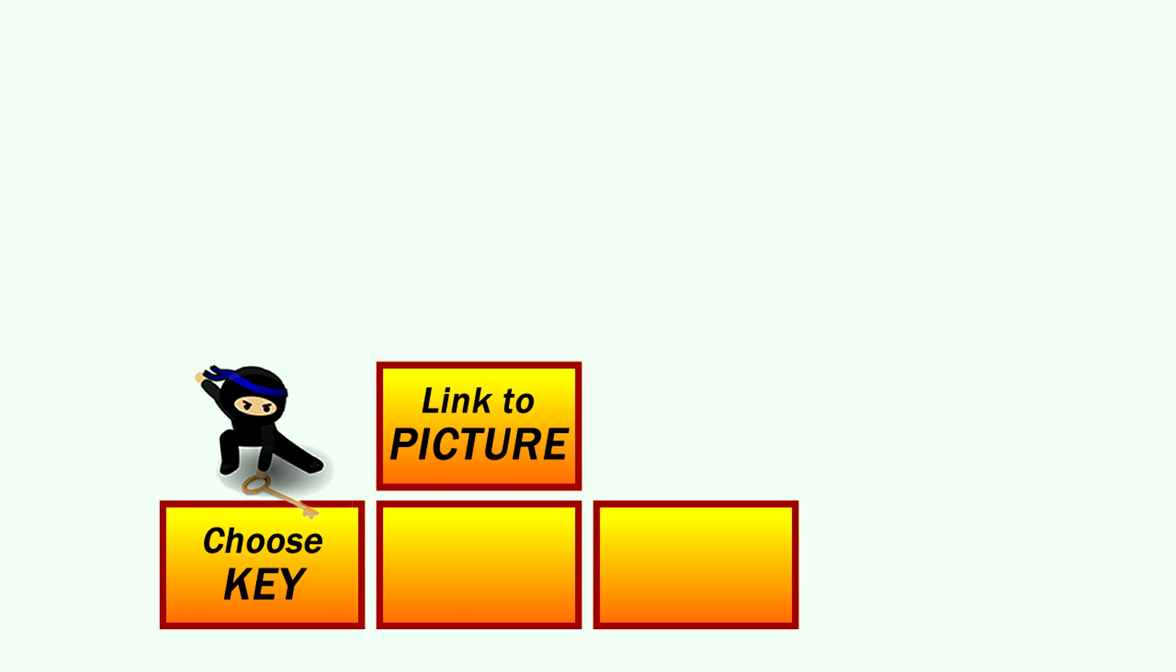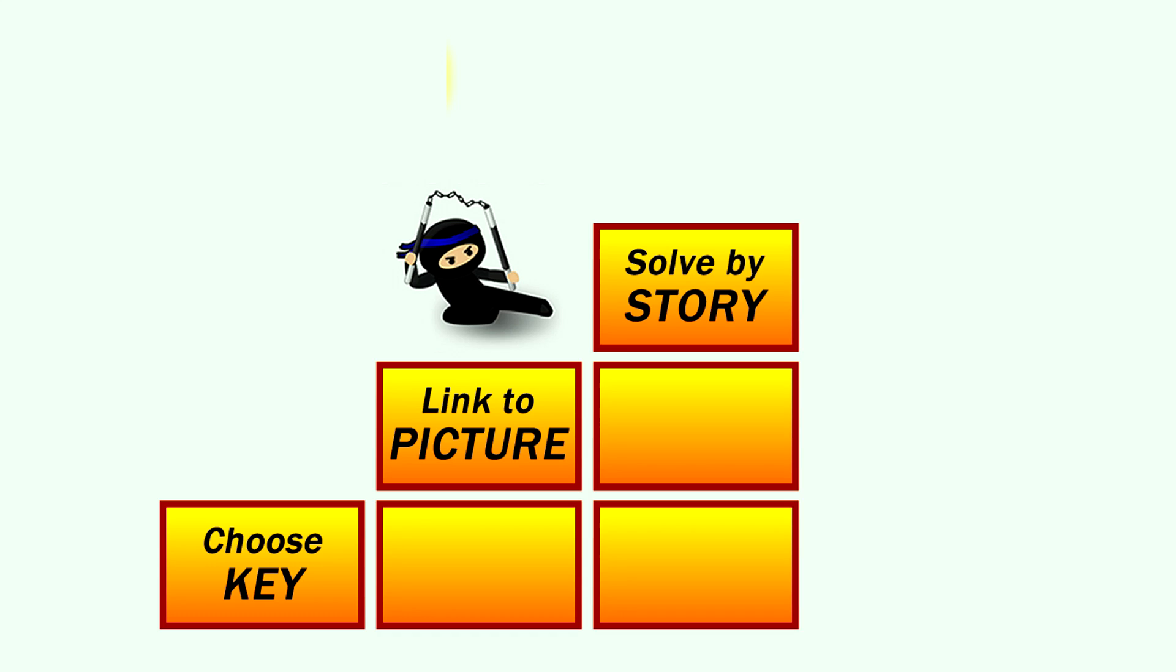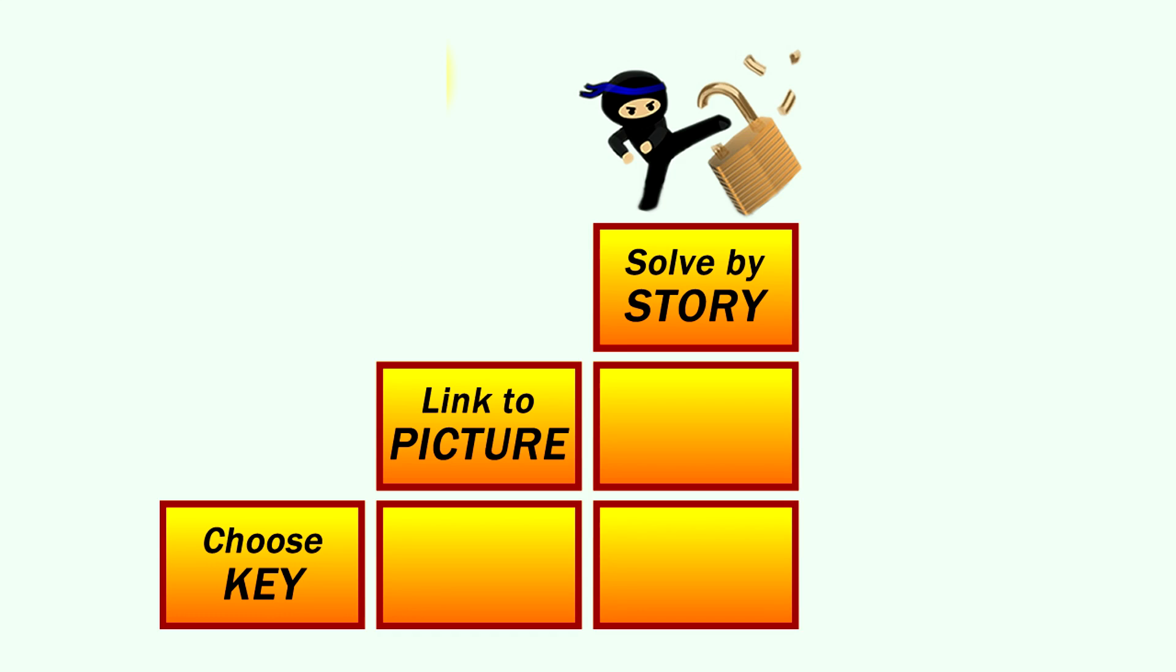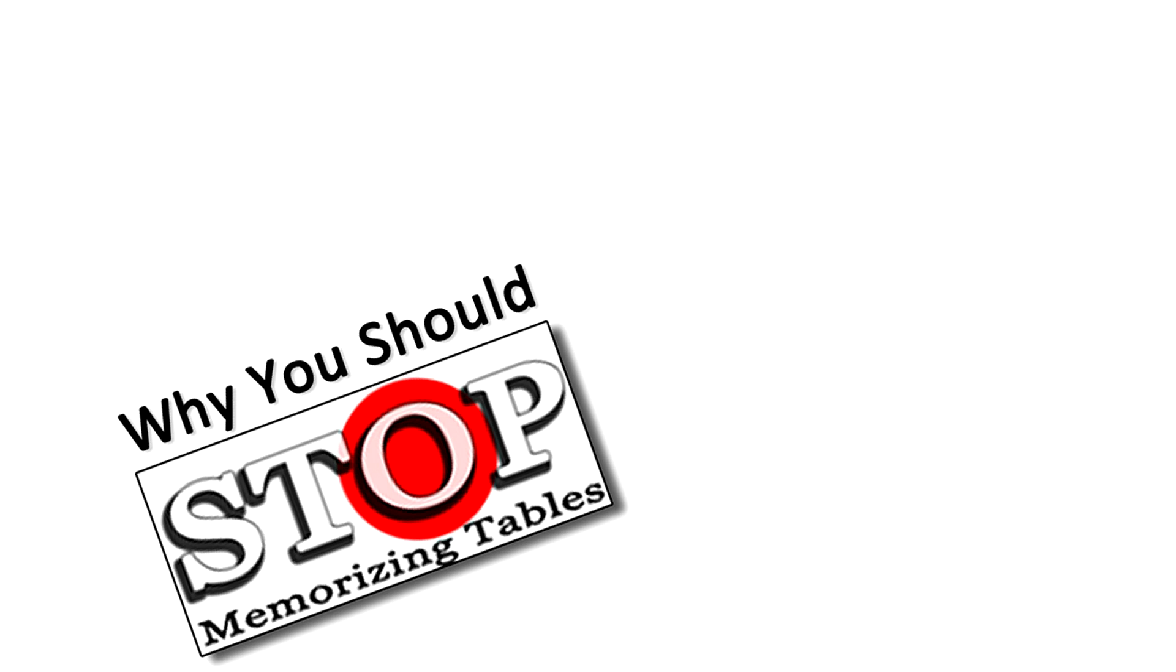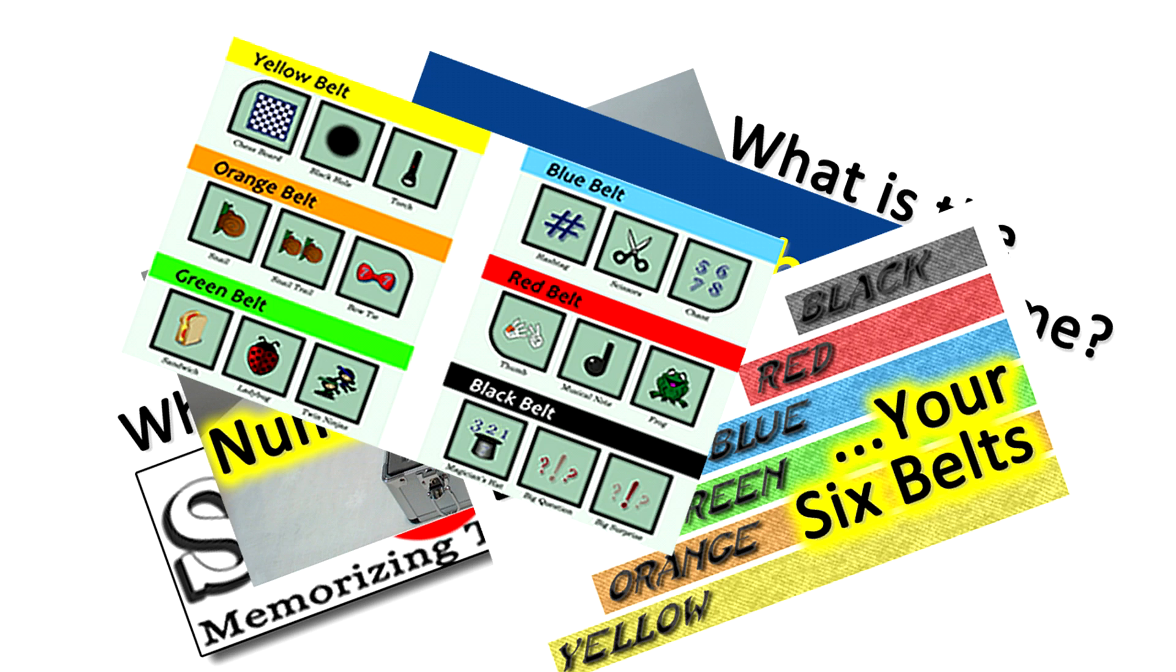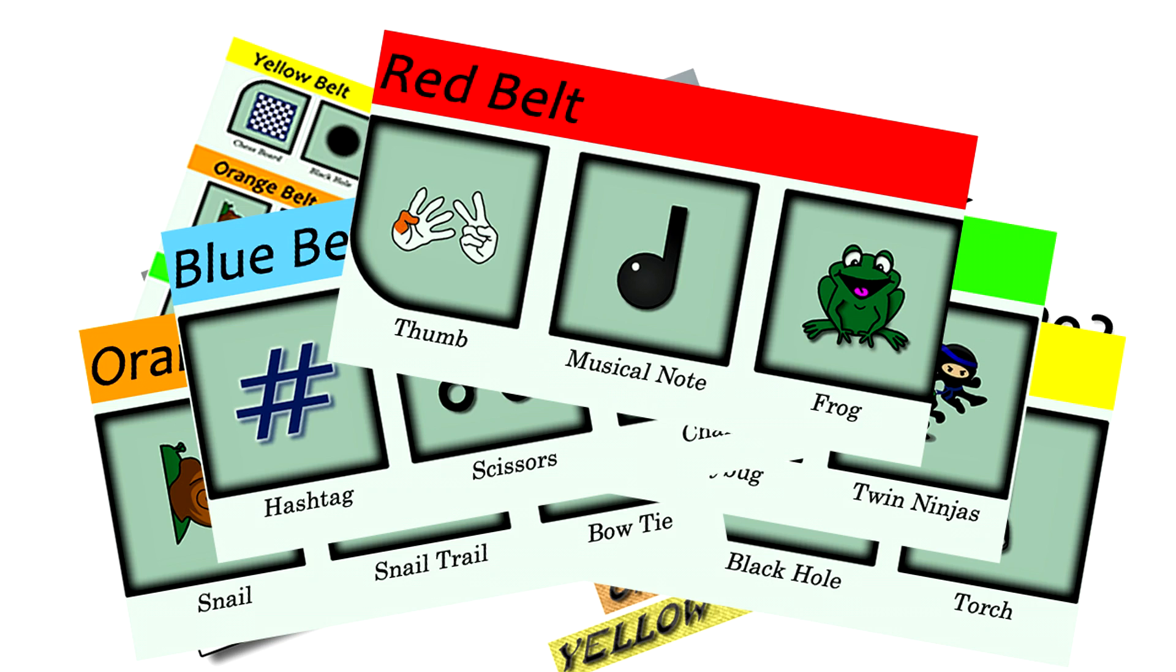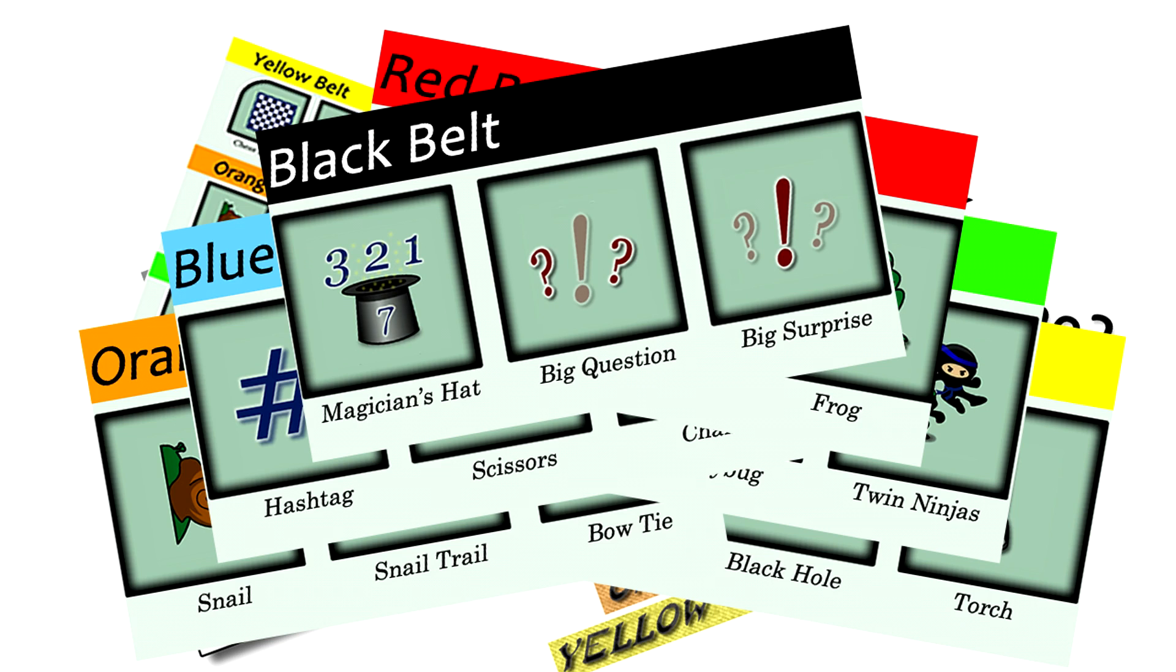The second step is to link the key you chose to its special picture, which as you'll see is really easy too. And lastly you just use the story related to the picture to get quickly and easily to the answer. Now if you've not already seen any of my videos about those simple picture stories, be sure to check those out either right here on this channel or the more detailed ones over on my number.ninja website. You'll see how with just a few stories you can multiply many problems, and I'm not just talking about those up to 12 times 12. You can use these for many problems way beyond that. Let me show you some examples.